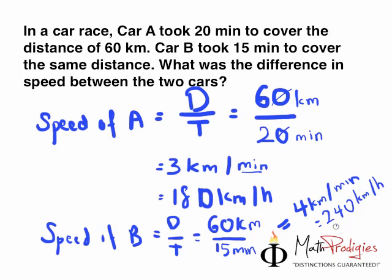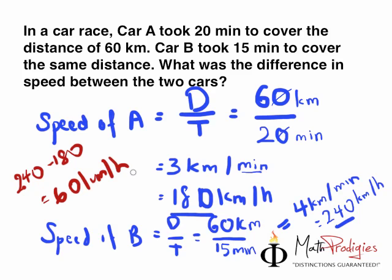So what is the difference between 240 and 180? 240 minus 180 will give you the answer of 60 kilometers per hour. Very simple. And that is the answer. If you got it right one more time, give yourself a high five. You are a math prodigy. Good job.